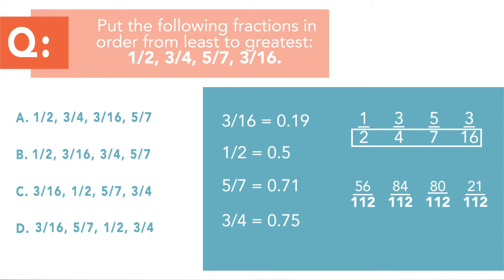Now, a little bit of a testing tip. One of the easiest ways to answer this is just identify the smallest fraction on there and then any answer option that doesn't begin with that fraction, you can eliminate. And the same is true for the largest fraction. So the correct answer here is going to be three sixteenths, one half, five sevenths, and three quarters. That's the correct order from least to greatest.